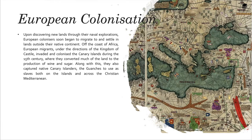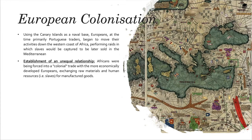Upon discovering new lands, European colonizers began to migrate to and settle in lands outside their native continent. European migrants under the directions of the Kingdom of Castile invaded and colonized the Canary Islands during the 15th century, converting much of the land to production of wine and sugar. They also captured native Canary Islanders, the Guanches, to use as slaves across the Christian Mediterranean. Using the Canary Islands as a naval base, Portuguese traders then moved down the western coast of Africa, performing raids to capture slaves to be sold in the Mediterranean. Africans were forced into a colonial trade exchanging raw materials and human resources for European manufactured goods.